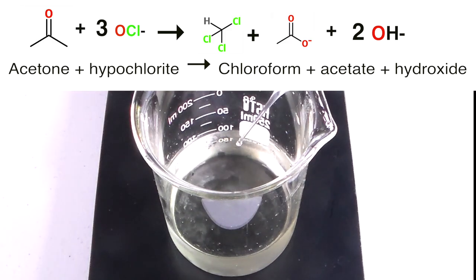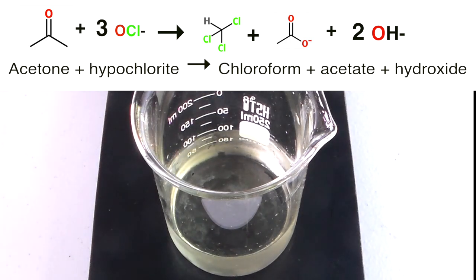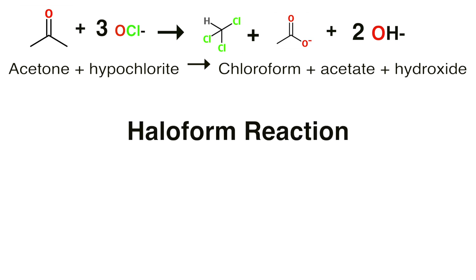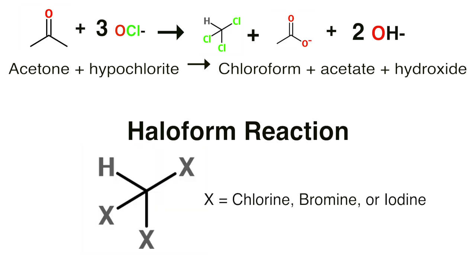In this reaction, one mole of acetone reacts with three moles of hypochlorite ions from the bleach. This produces chloroform, acetate, and hydroxide. This reaction is known as the haliform reaction because it produces a haliform, which is basically a methane molecule where three of the hydrogens have been replaced by a halogen.